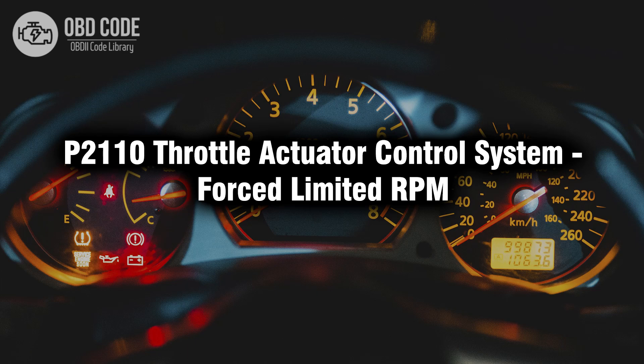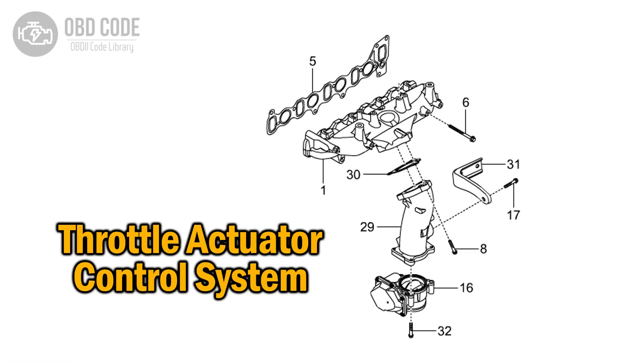Welcome. In this video we will talk about code P2110, its symptoms, causes and possible solutions. P2110 is a diagnostic trouble code related to the throttle actuator control system, indicating that the engine's RPM is being limited by the control system due to a fault.